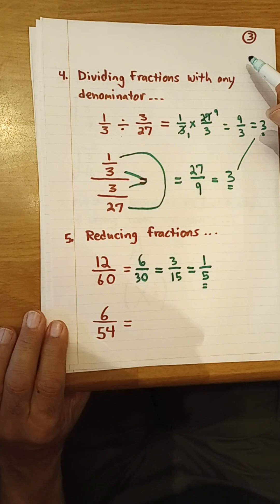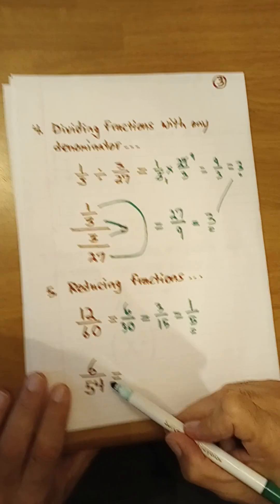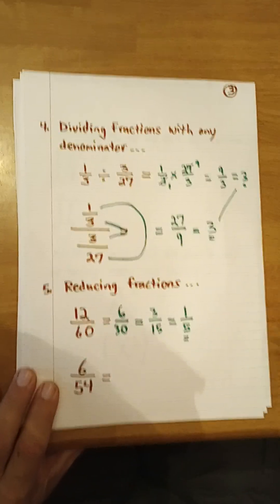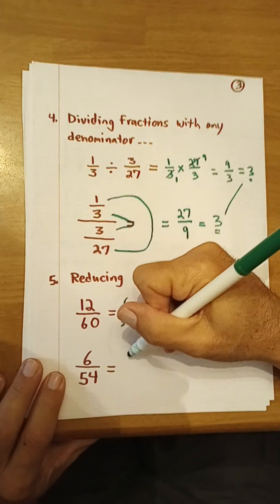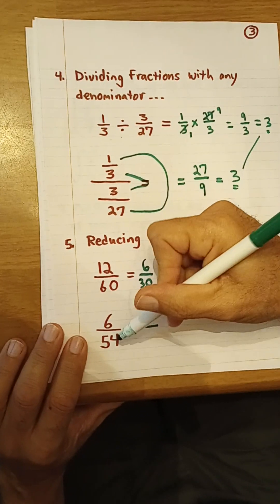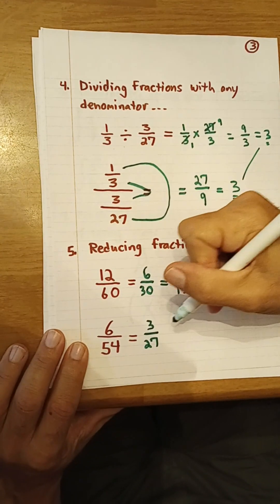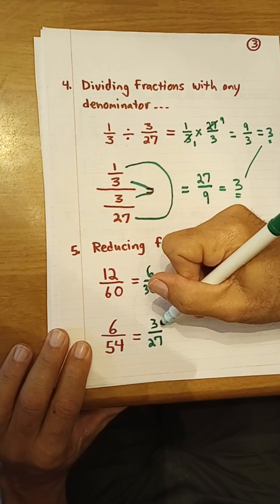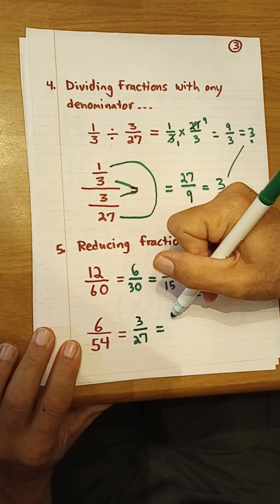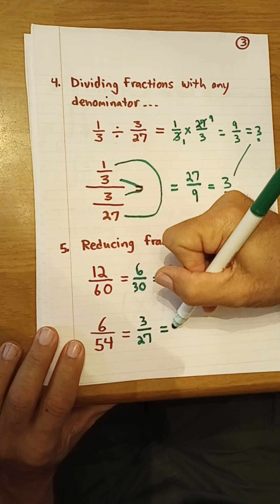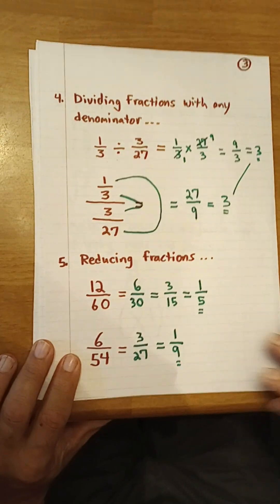Let's try another one with 6/54. If you don't recognize both are divisible by 6, start with 2: 2 goes into 6 three times, 2 goes into 54 twenty-seven times, giving 3/27. Both 3 and 27 are divisible by 3: 3 goes into 3 once, 3 goes into 27 nine times. So 6/54 equals 1/9.